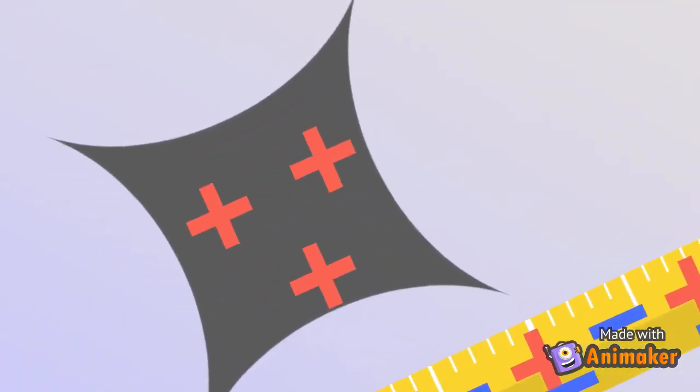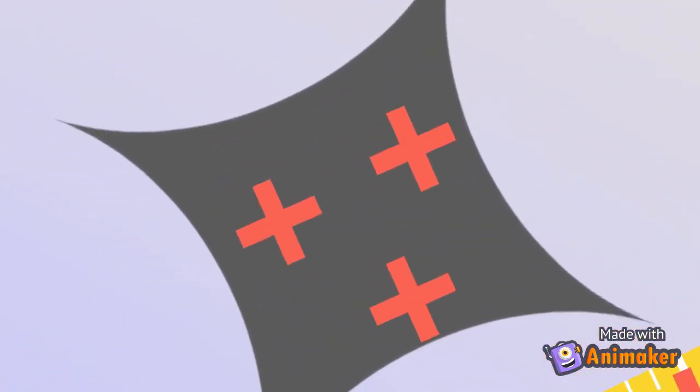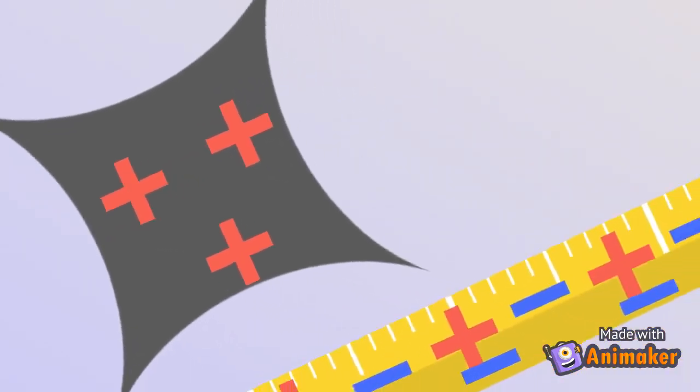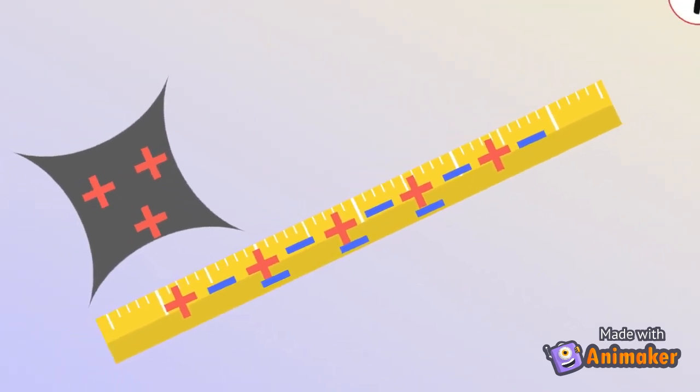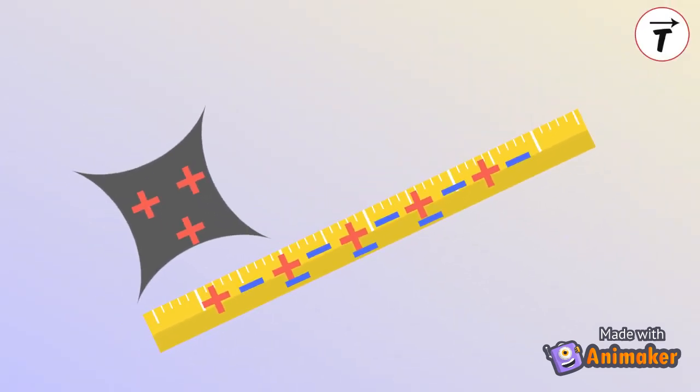The cloth has lost electrons, therefore it becomes positively charged. The ruler has gained electrons, therefore it becomes negatively charged. The number of electrons gained by the ruler is exactly equal to that lost by the cloth.